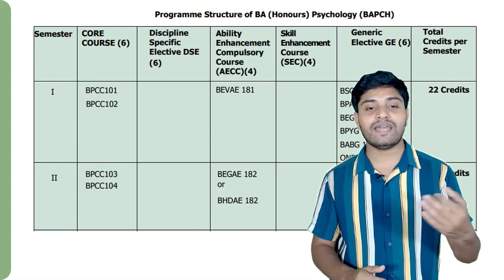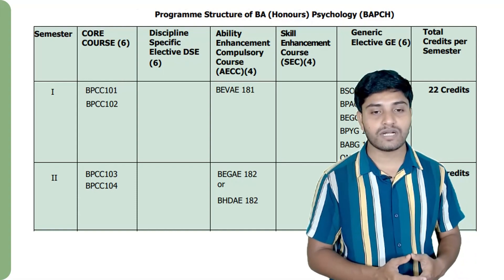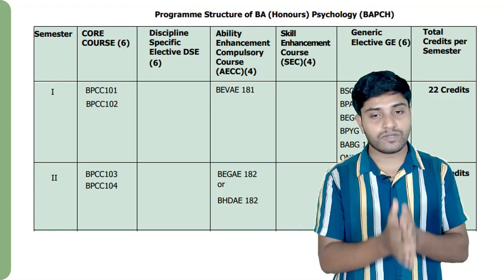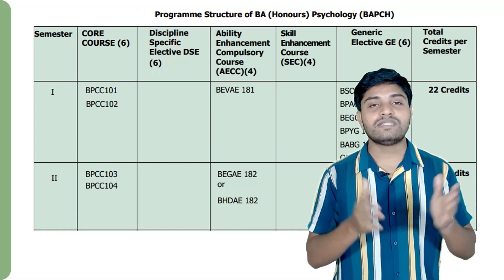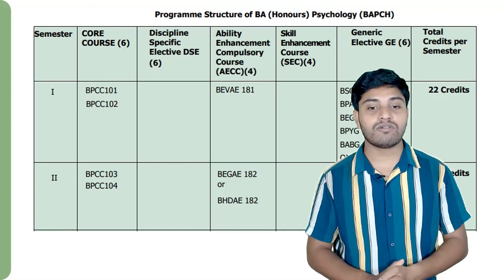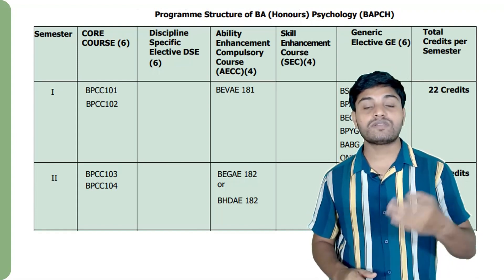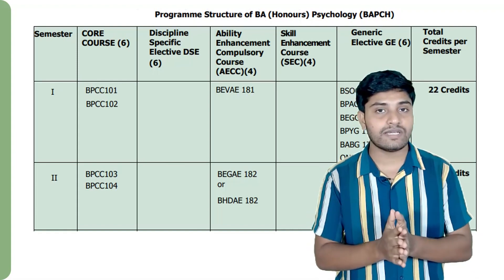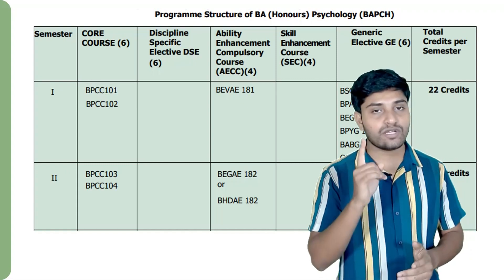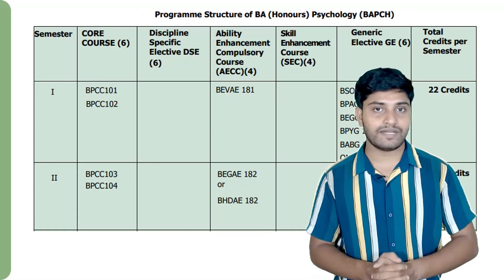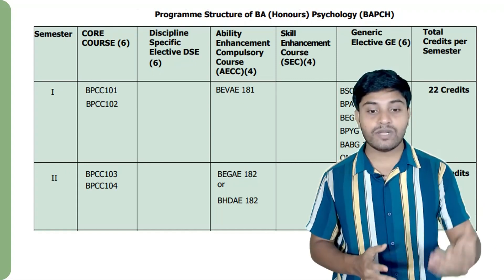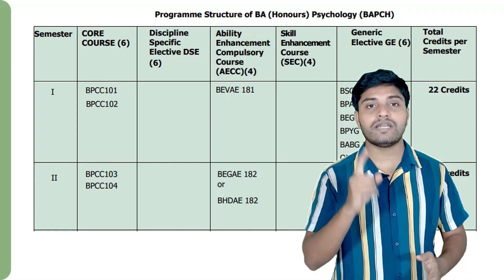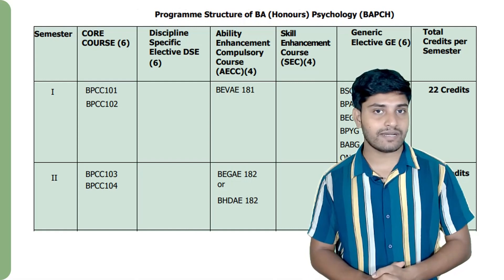In the skill enhancement courses, there are papers in first year. In generic electives, we will choose in the first semester and the second semester. We will choose 4 papers in the second semester.